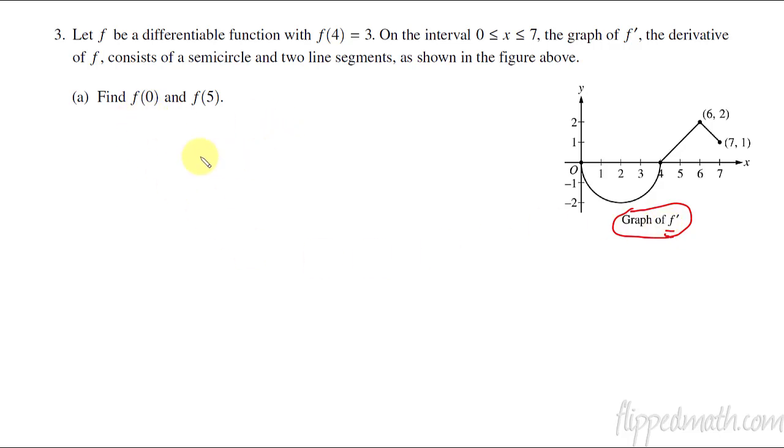All right, so the first one, F(0) and F(5). Let's find these values. Now I actually think it's easier to find F(5) first, so I'm just going to show you that one first and then I can build off from there how we find F(0). So F(5), we know what F(4) is. F(4) equals 3.